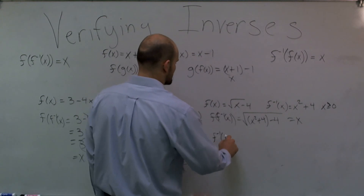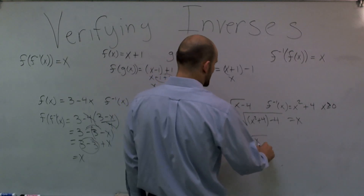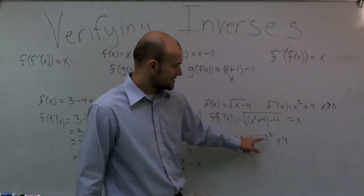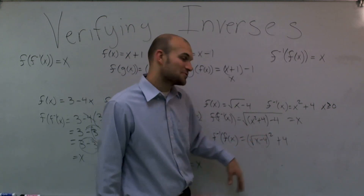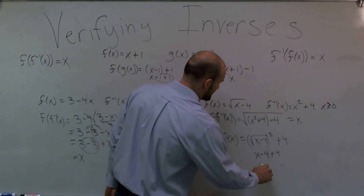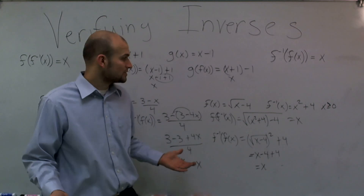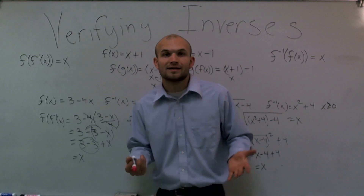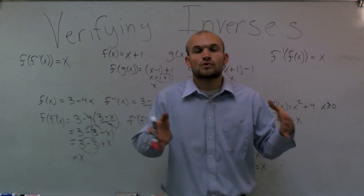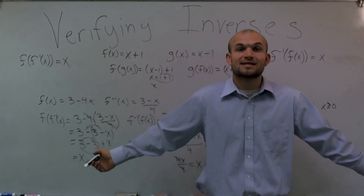Next, f⁻¹(f(x)): I take (√(x − 4))² + 4, which gives (x − 4) + 4. Since −4 + 4 cancels out, I'm left with x. Both compositions yield x, so these are verified inverses. Remember: on your last step when you verify, just use composition. Inverses are about undoing — if you add one, you subtract one — and inverse operations bring you back to your identity element x. That's how you verify inverses.